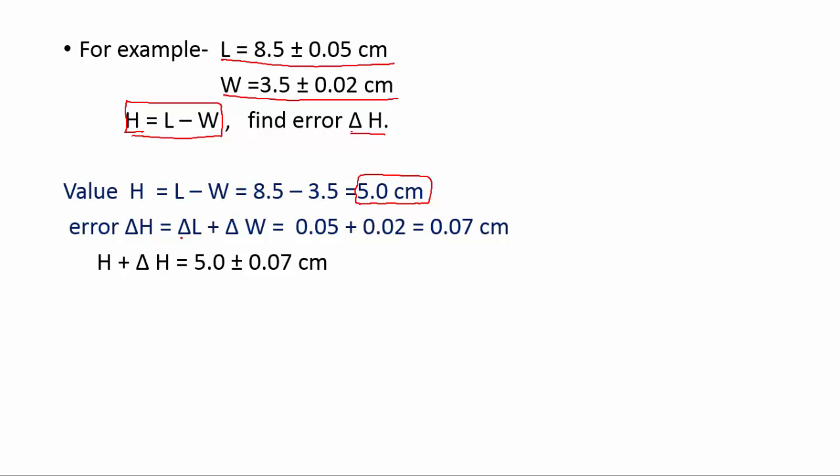And now we will find error in h. For that we will add error in length and error in width. So final answer will be h, that is the value 5 cm plus error that is 0.07 cm, giving us h plus delta h equals 5.0 plus 0.07 cm.